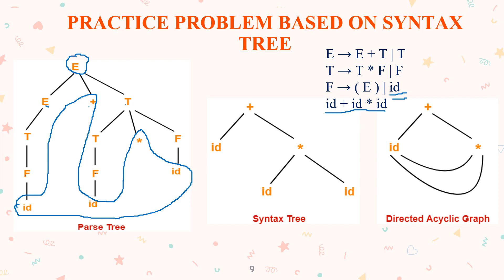In the syntax tree, we take ID plus ID asterisk ID only, because the syntax tree is the simplest form of the parse tree. We represent this in a smaller, simpler format.